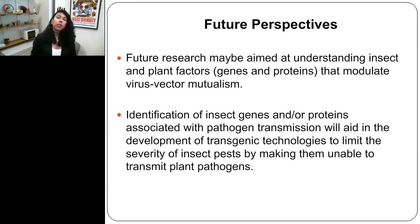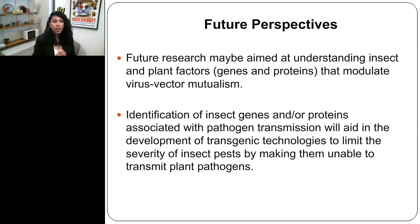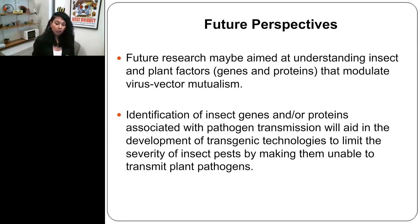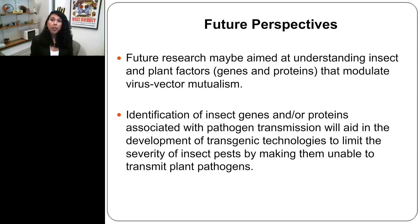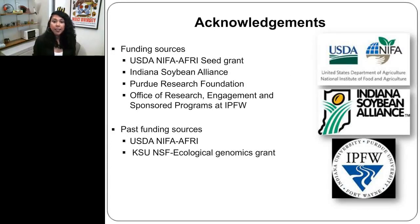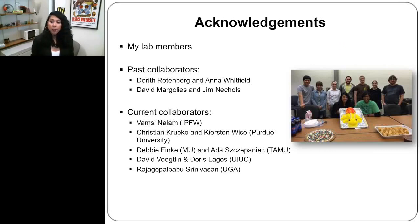To conclude: there is a lot of information we are accumulating about virus–vector interactions, but there is a need to understand specific genes and proteins that will help identify technologies or strategies to limit the transmission of plant pathogens. We are a long way from there because it's a challenging system — thrips are small. But there has been a lot of progress, especially with the tomato spotted wilt virus and western flower thrips system, in understanding the genes and proteins involved in virus transmission. I'd like to thank my funding sources, my team at IPFW including graduate and undergraduate students, and past and current collaborators.